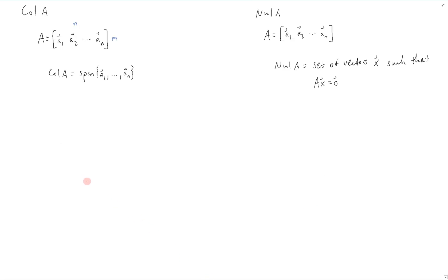So now we can make some observations about these subspaces. First of all, we can see that col A, the column space of A, is in R^m.